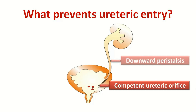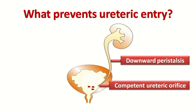The second defense is that the ureter is all the time in a state of peristalsis, and urine is flowing downwards all the time. So even if bacteria move inside the ureter, they are thrown back down into the bladder. Bacteria find it very difficult to swim against the current of urinary flow. So these are two powerful defenses of the upper urinary tract.